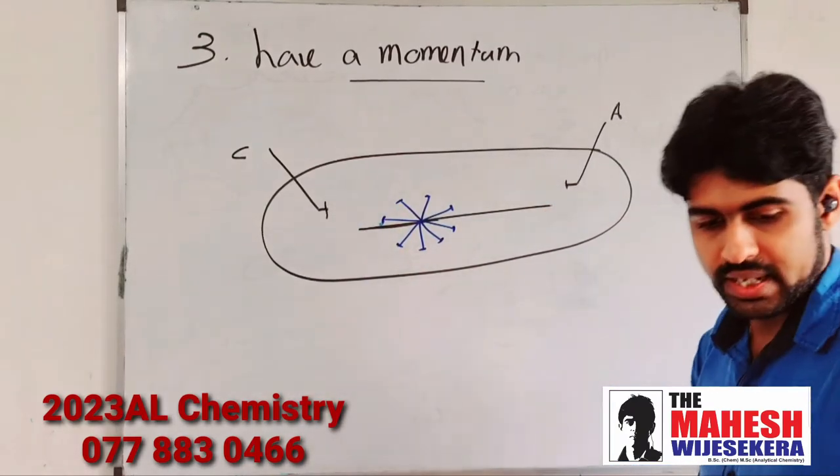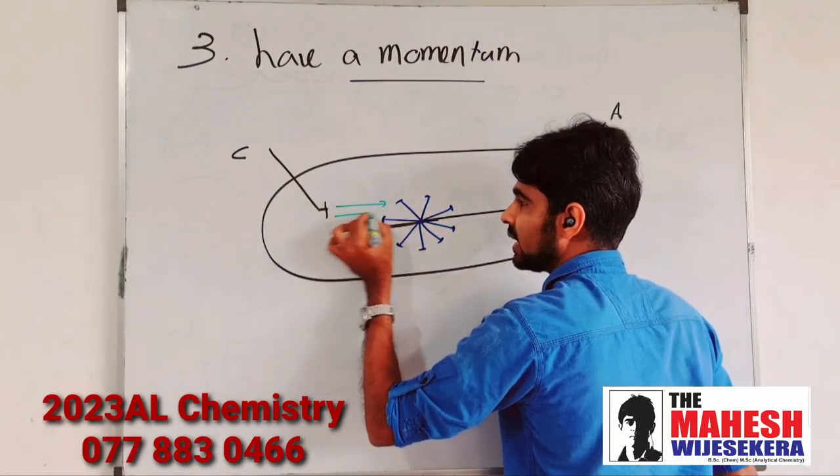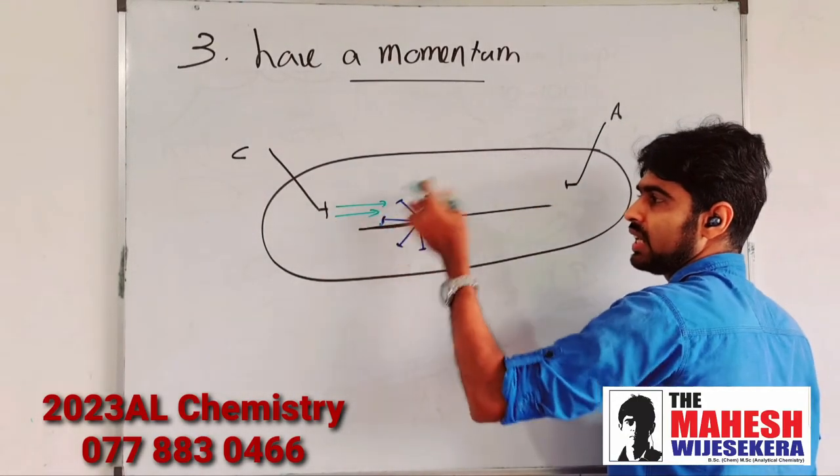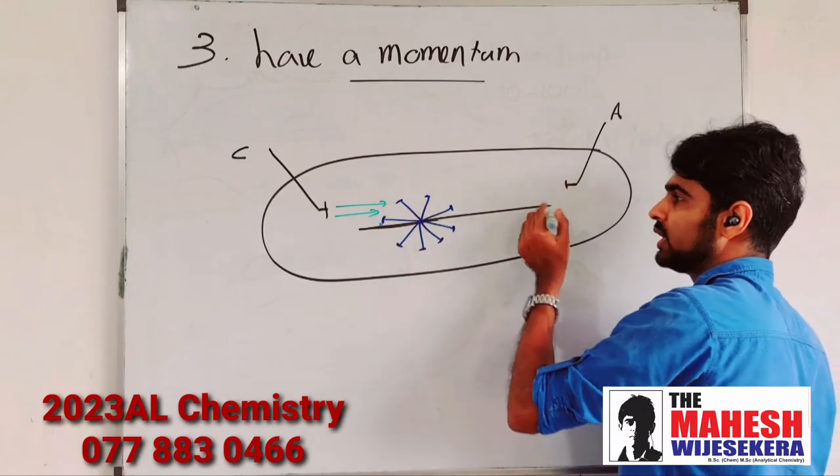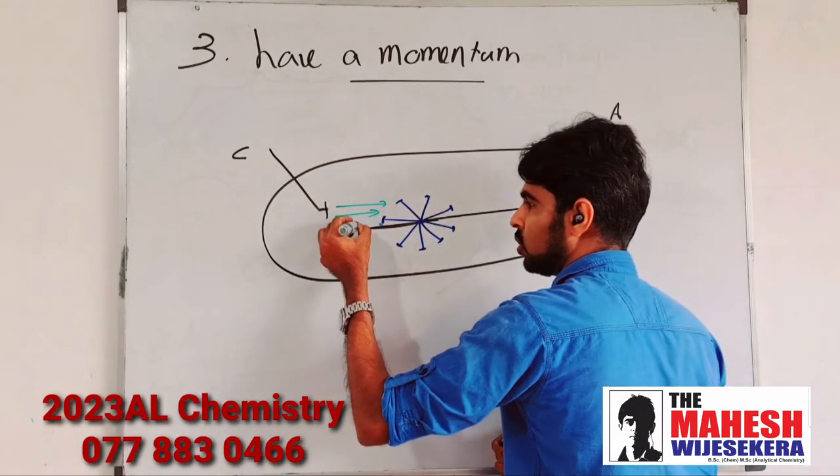Then what happens? When the cathode rays are generated and the cathode rays collide with this wheel, it rotates and comes to this end. It rotates and comes to this end.